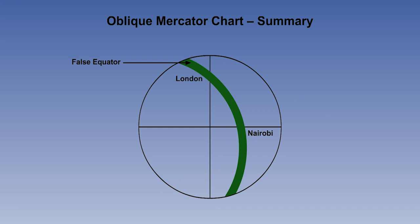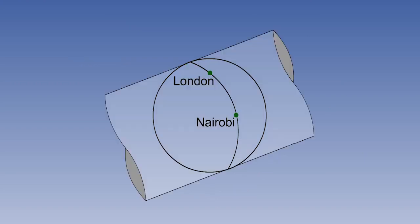Let's summarise this lesson. If the great circle route between two points is chosen as the great circle of tangency, and the cylinder is wrapped round this, the result is an oblique Mercator projection.